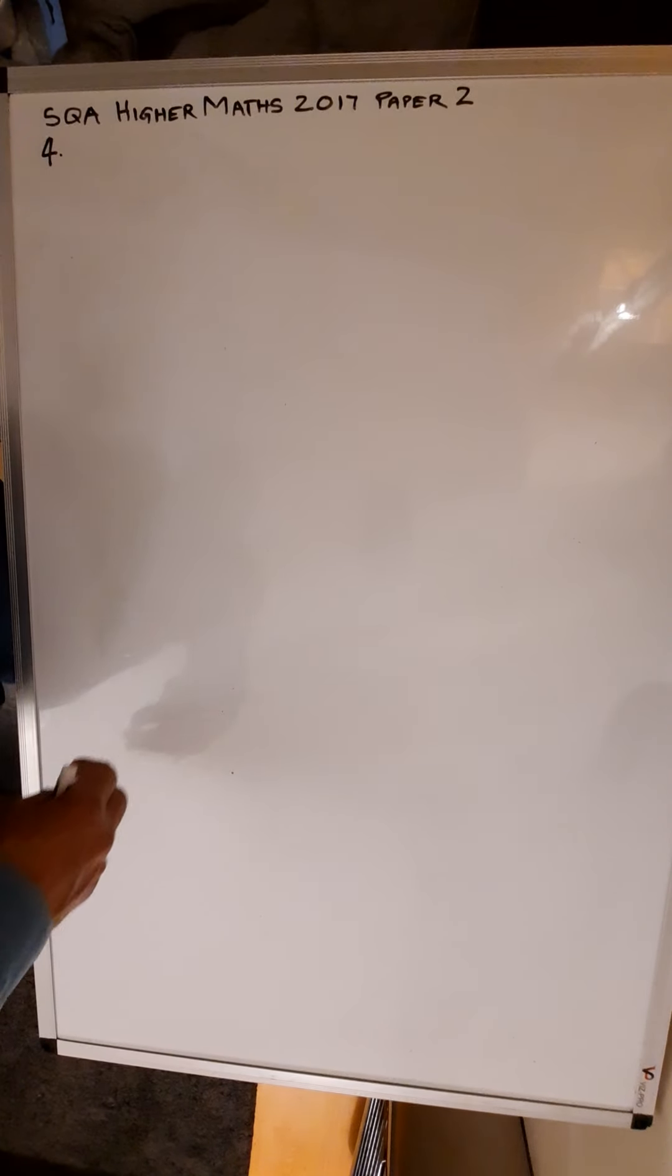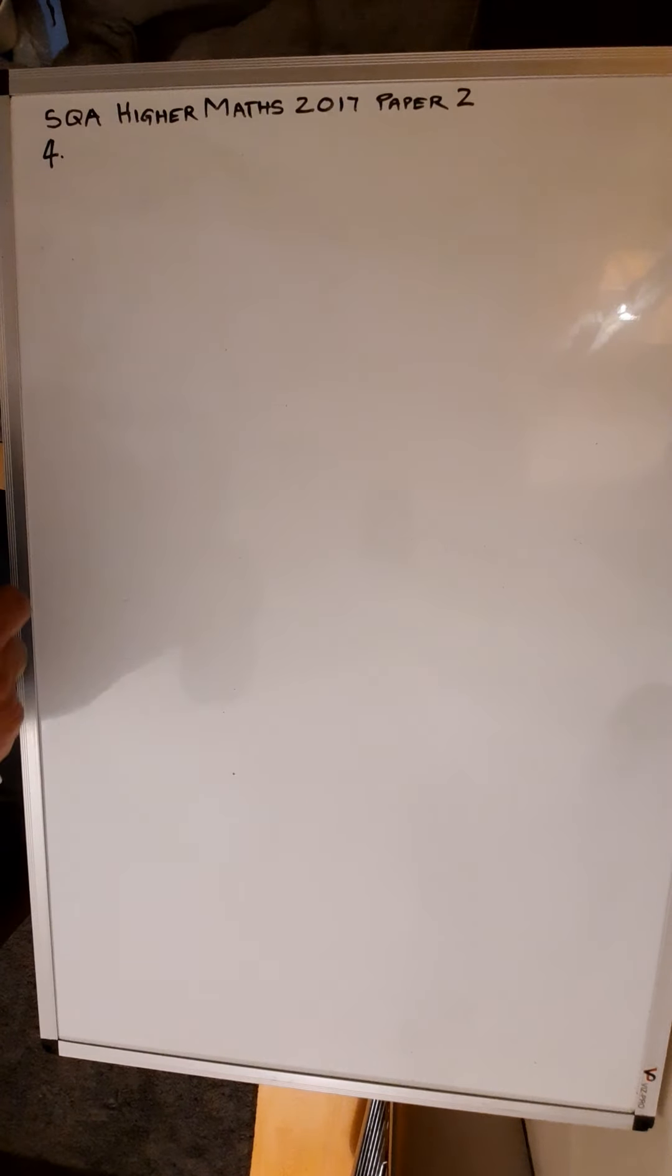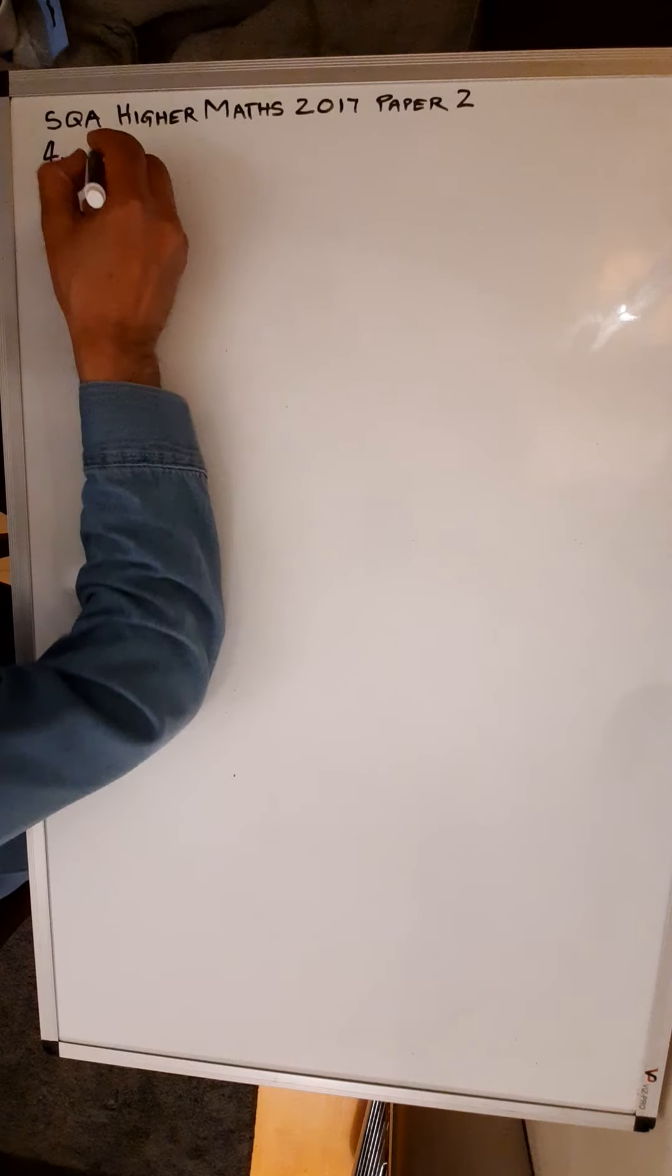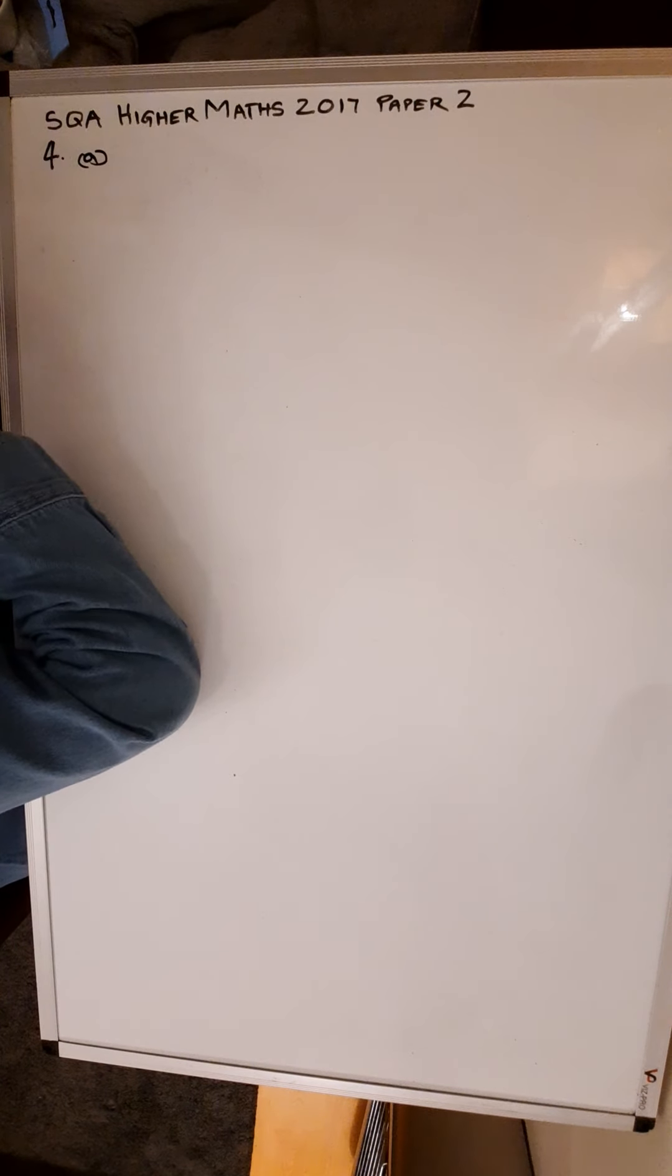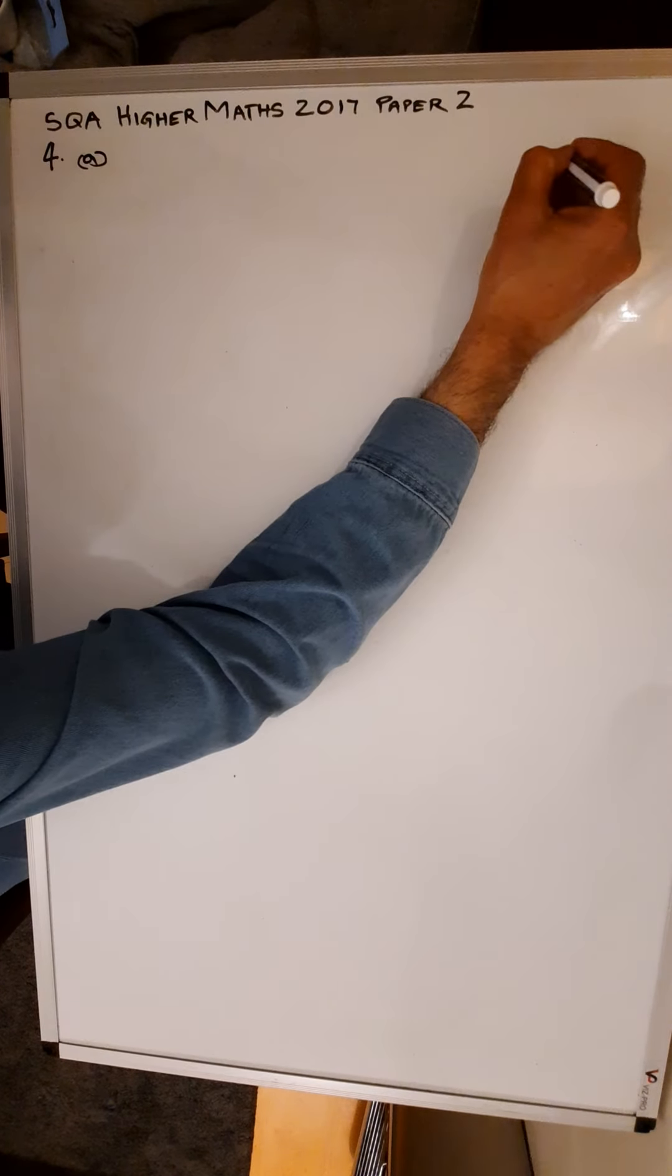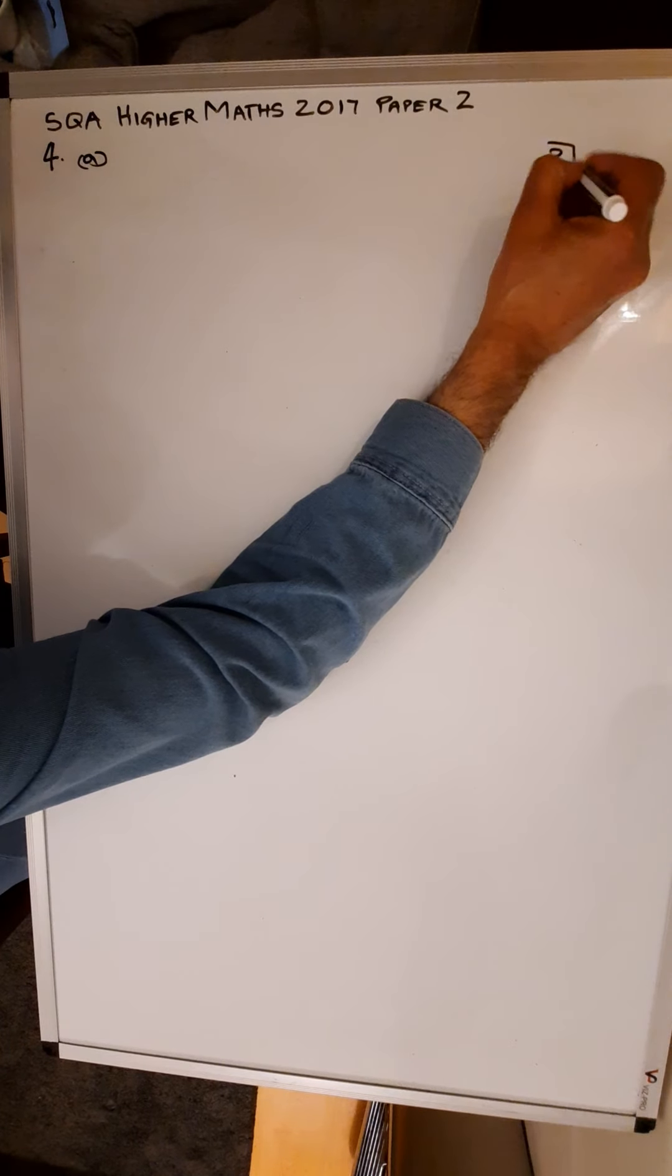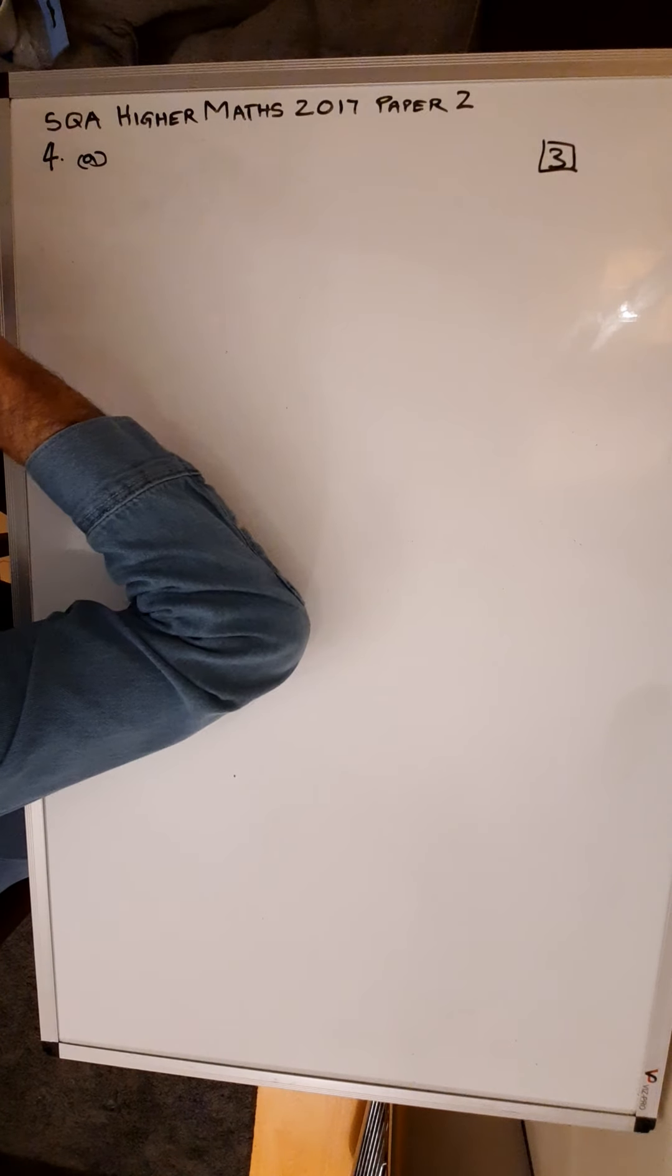SQA Higher Maths 2017 Paper 2, Question Number 4, Part A. Part A is for 3 marks, maybe 3 to 5 minutes roughly for this question, 1 to 2 minutes per mark.